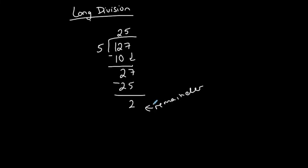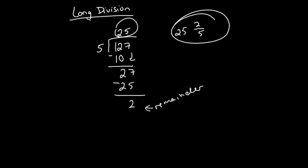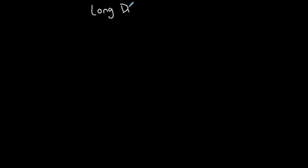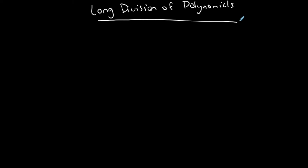If you recall how you represent your answer: you take the top, 25, and then say it's 25 and this remainder 2 out of 5 — the remainder goes over the divisor. So it's like saying 25 plus 2/5, or 25 and 2/5. This is my complete quotient. Long division of polynomials is the same — it's just that now instead of numbers you have polynomials.